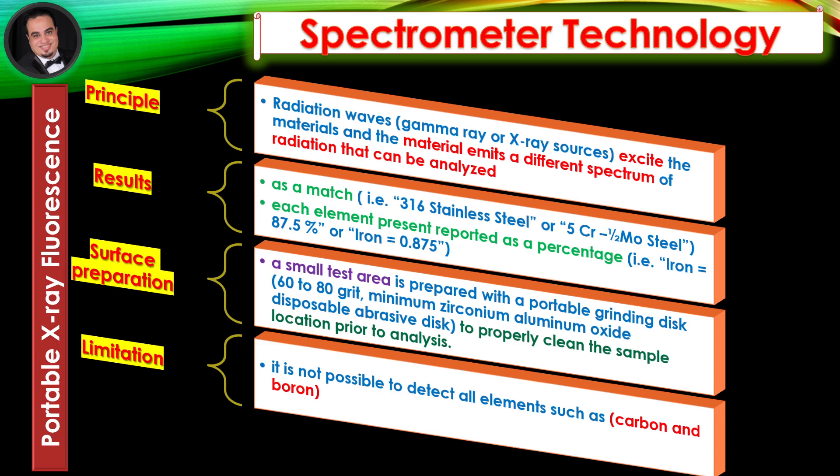Results: The results of this analysis can be reported in either of the following formats — as a match, that is 316 stainless steel or 5 chromium 1 half molybdenum steel, and/or each element present reported as a percentage, that is iron equals 87.5%, or iron equals 0.875.